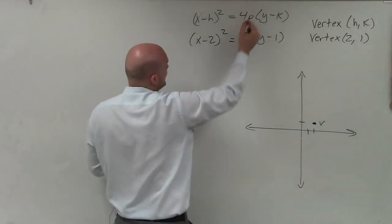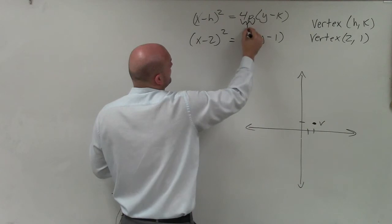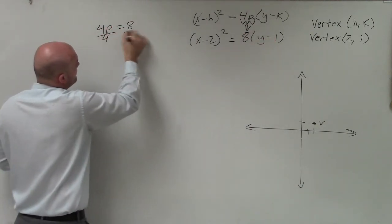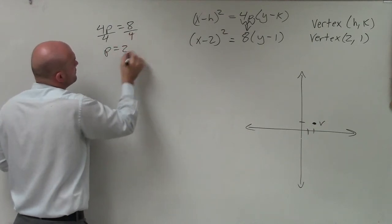So to do that, I understand that here 4p is equivalent to 8. So I say 4p = 8. Divide by 4, p = 2.